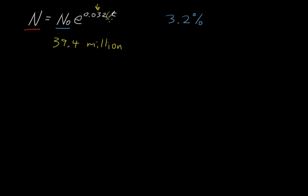And we need to know the t to plug in here. Let's say we've got 39.4 million people in 2004 and we want to know what about in 2015. Well, the time span from 2004 to 2015 is 11 years.